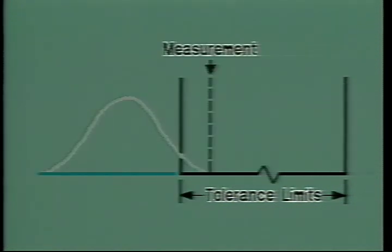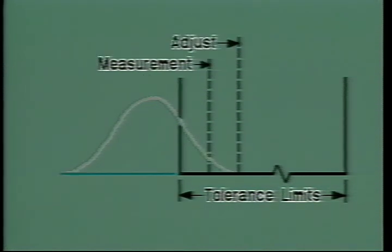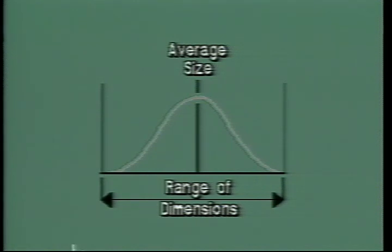What if that measurement happened to be at the other end of the curve? In this case, a lot of parts would be out of tolerance, yet since you don't know where the process is centered, you don't know how much to adjust it. Adjusting the machine the same amount as before would not solve the problem. You would still be producing a large percentage of parts out of tolerance.